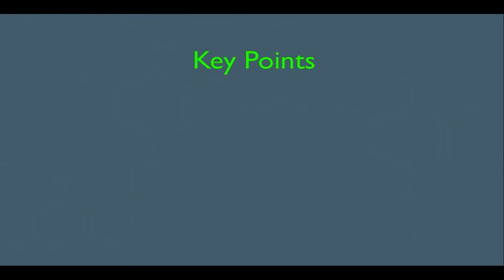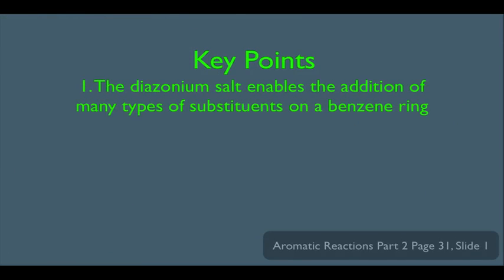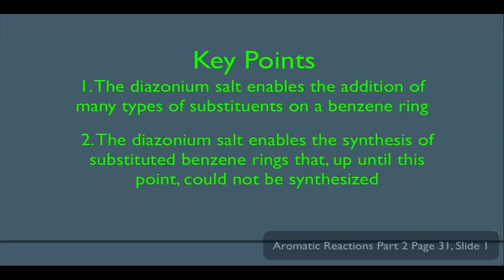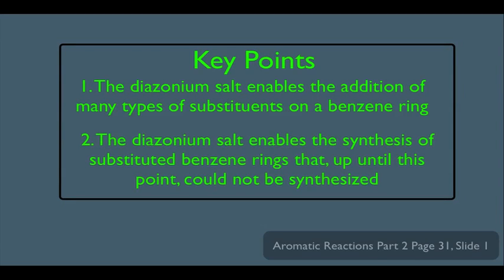So, what are our key points here? Well, number one, we saw that the diazonium salt enables the addition of many types of substituents on a benzene ring. We also saw number two, the diazonium salt enables the synthesis of substituted benzene rings that, up until this point, could not be synthesized.